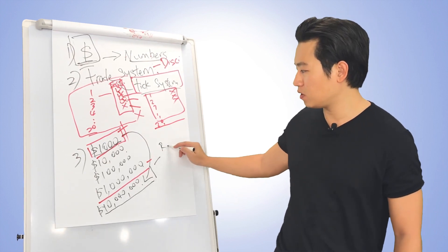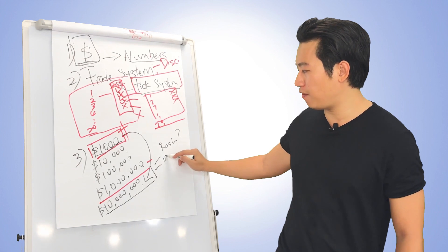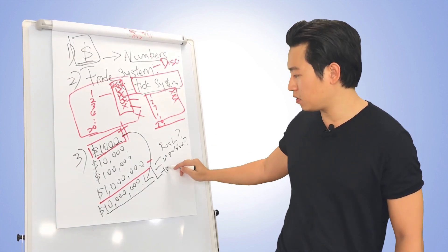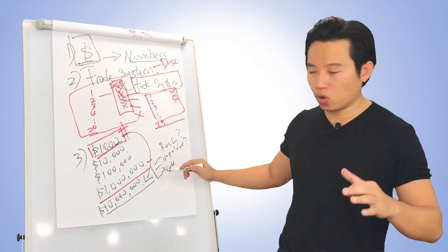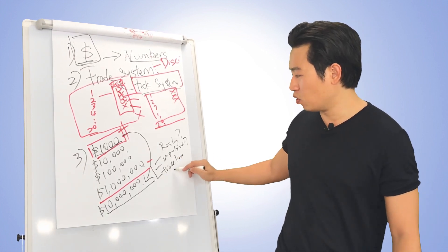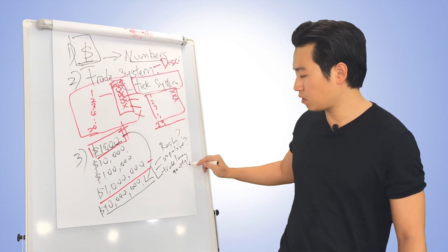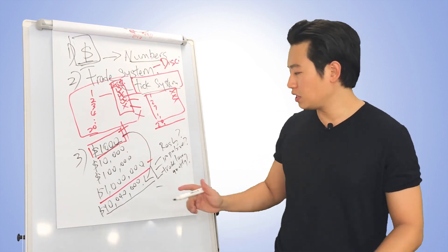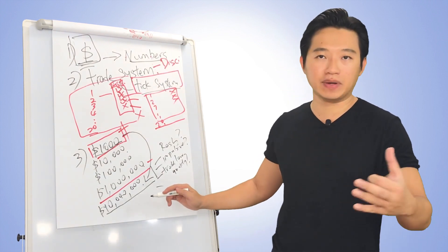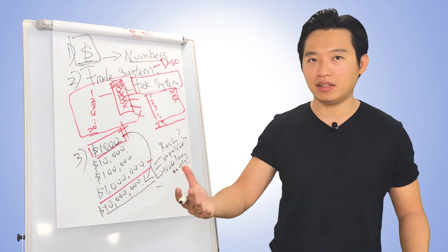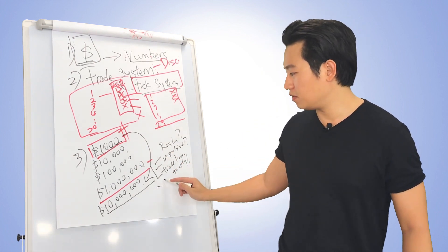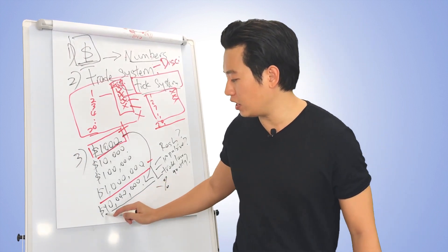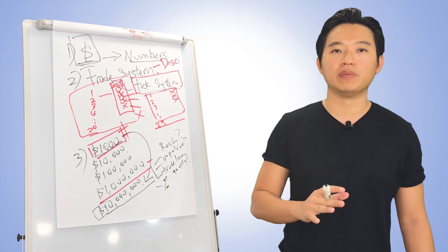If you're managing a $10,000,000 account, will you be rash? Will you be impulsive? Will you take low quality trades? Likely not. Will you suddenly risk 5% or even 20% on a single trade? Likely not. The person trading with a $10,000,000 mindset will behave very differently.